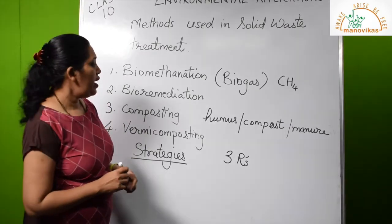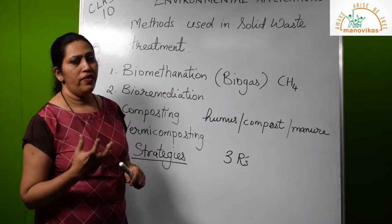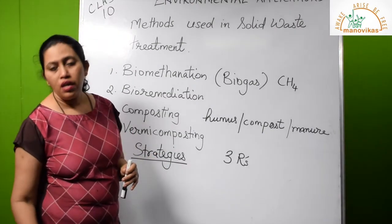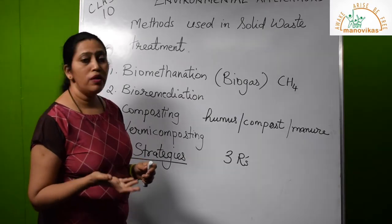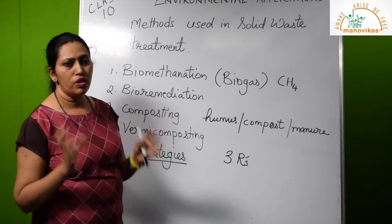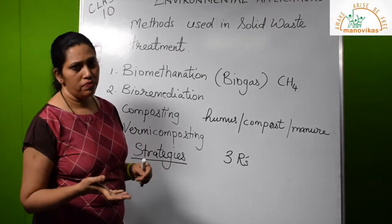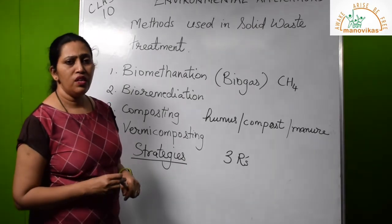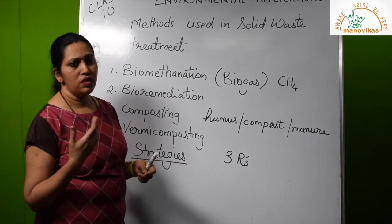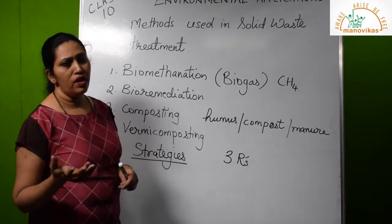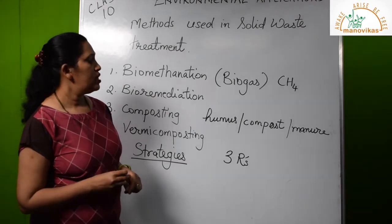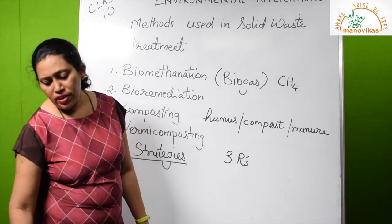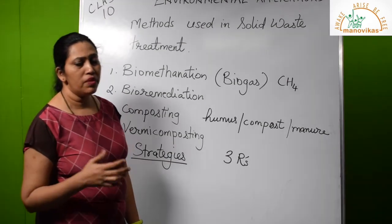Reuse means — for example, jam and pickle glass bottles can be washed well and reused to store kitchen items. A new problem today is that many masks are being thrown into water bodies. Using washable masks prevents this problem. Similarly, use cloth nappies for babies instead of market ones, since disposable nappies are not biodegradable and cause many problems for waste handlers. Newspapers and some other things can also be recycled.